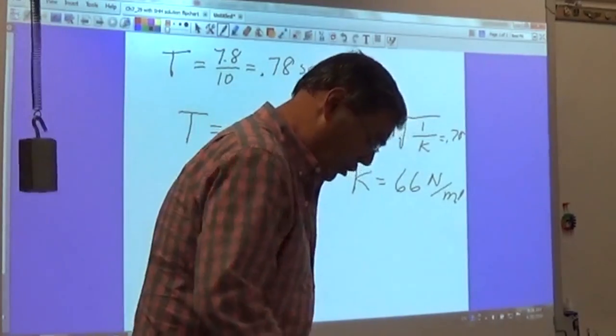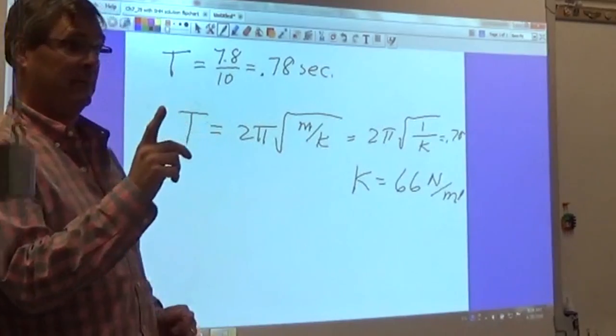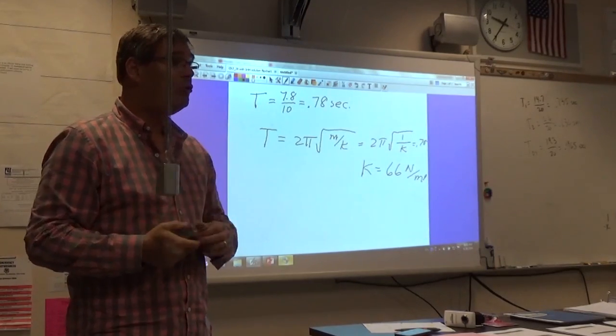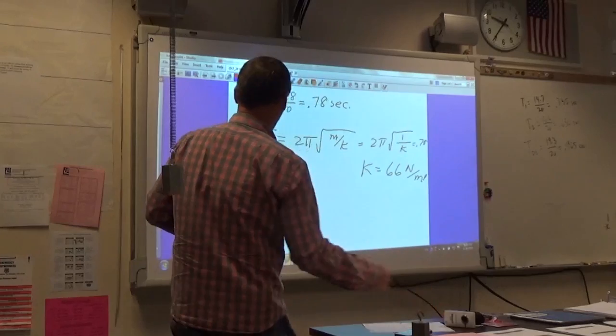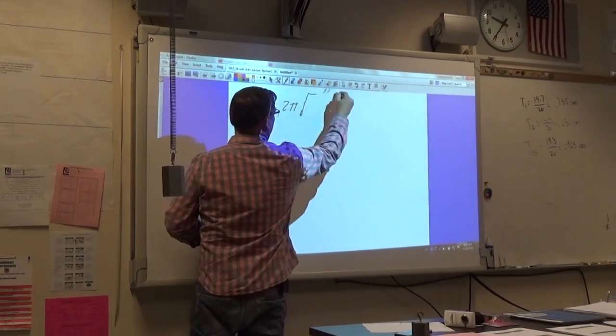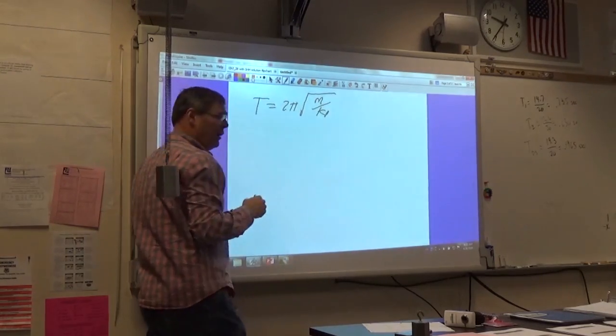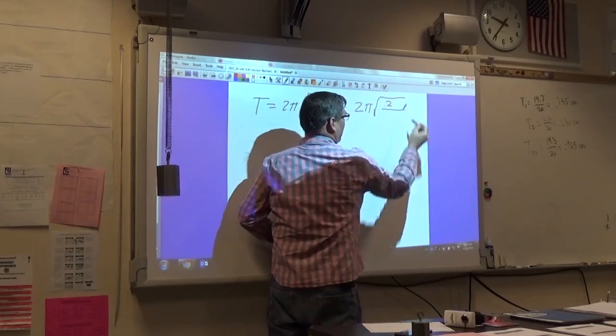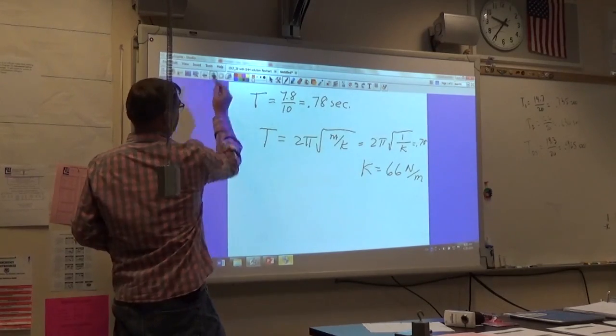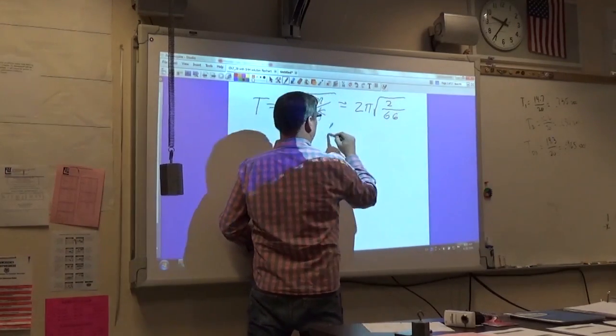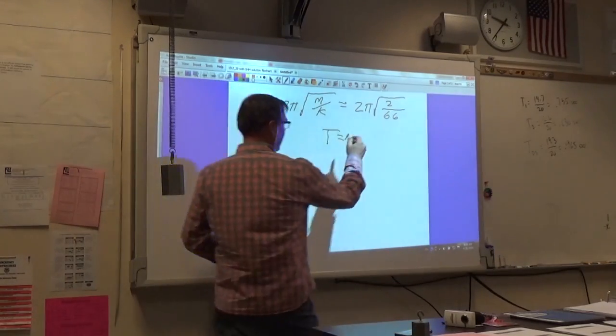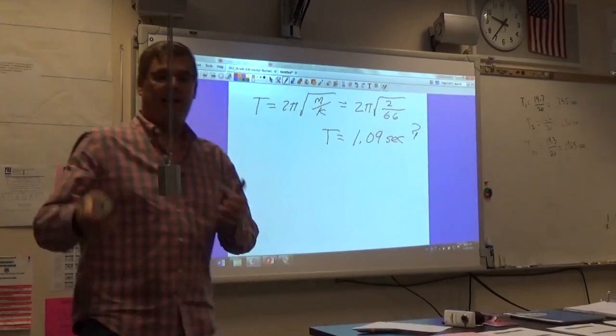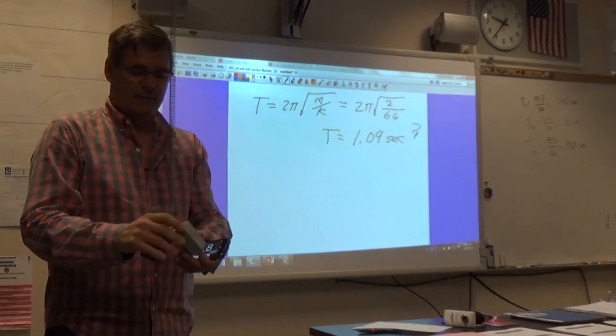So now let's predict if I take a second one kilogram mass and I hang it on the spring, what will the new period be? So let's see if we can do that. So T equals two pi square root of m over k. We said we are going to use two kilograms now. So that's two. And I just found out that my k constant is sixty six. So I'll put that in there. That's going to be one point zero nine seconds. Let's test it. So I'm going to put my second kilogram on there. Now there's two kilograms. I'm going to reset my stopwatch.